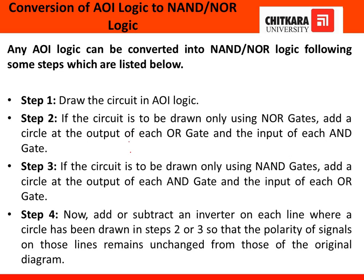For every OR gate, we place a bubble at the output so that it is converted to a NOR gate. We also place bubbles at the input of each AND gate and at the output of each AND gate, which is equivalent to a NOR gate.